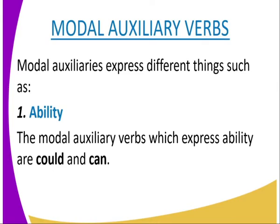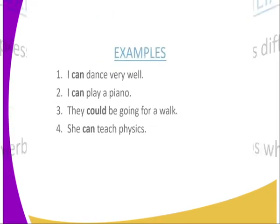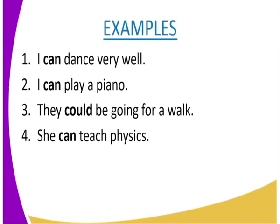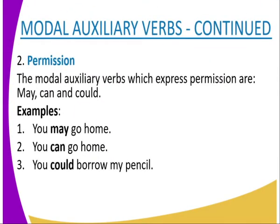We now look at modal auxiliary verbs. Modal auxiliary verbs express different things, such as ability. The modal auxiliary verbs expressing ability use the words 'can' and 'could.' For example: 'I can dance very well,' 'I can play the piano,' 'They could be going for a walk,' 'She can teach physics.' Modal auxiliaries also express permission, using 'may,' 'can,' and 'could.' For example: 'You may go home,' 'You can go home,' 'You could borrow a pen.'